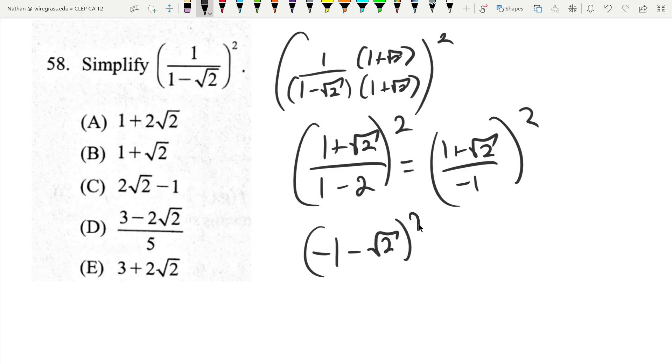And that thing being squared, so let's go ahead and square that out. We're going to get negative 1 times negative 1 is positive 1. The cross terms are going to be positive 2 root 2, and then this times itself is going to be positive 2. That gives me 3 plus 2 root 2.